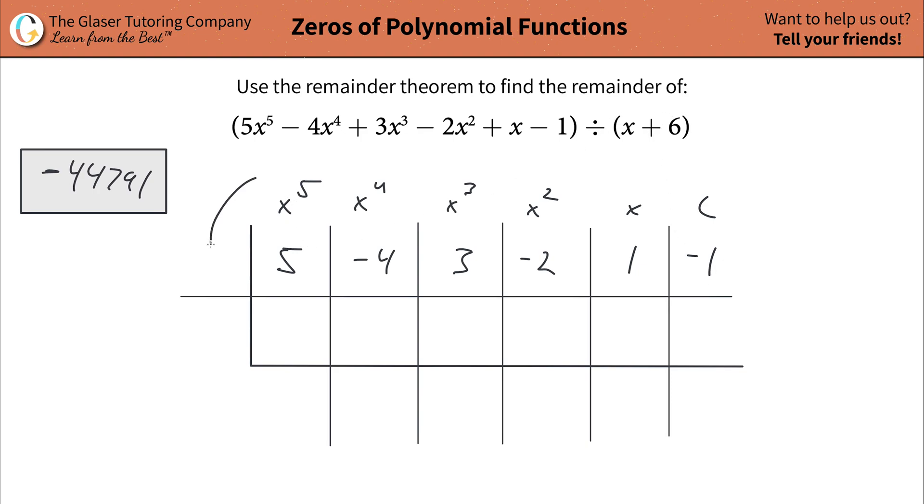Then what you're going to do is figure out the number that goes out there. You're going to take your divisor, x plus 6, set x plus 6 equal to 0 and solve for x. And that's going to be negative 6. The value you're going to plug in out here.